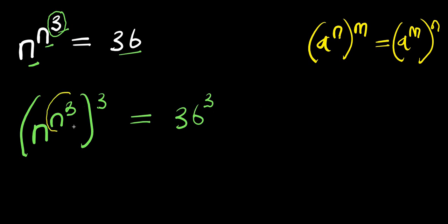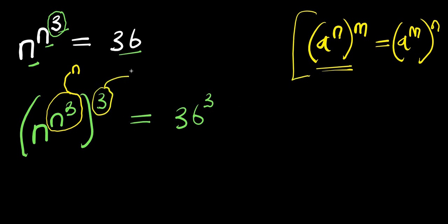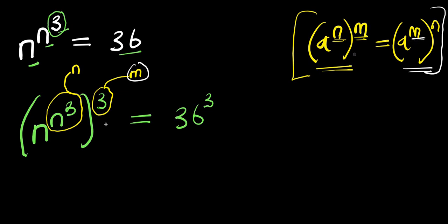We are going to consider this n power 3 as a single unit — let this represent our n. We are making use of this part of the identity, and the 3 will represent our m. The m, which is 3, is now placed inside the bracket, and the n goes outside the bracket.